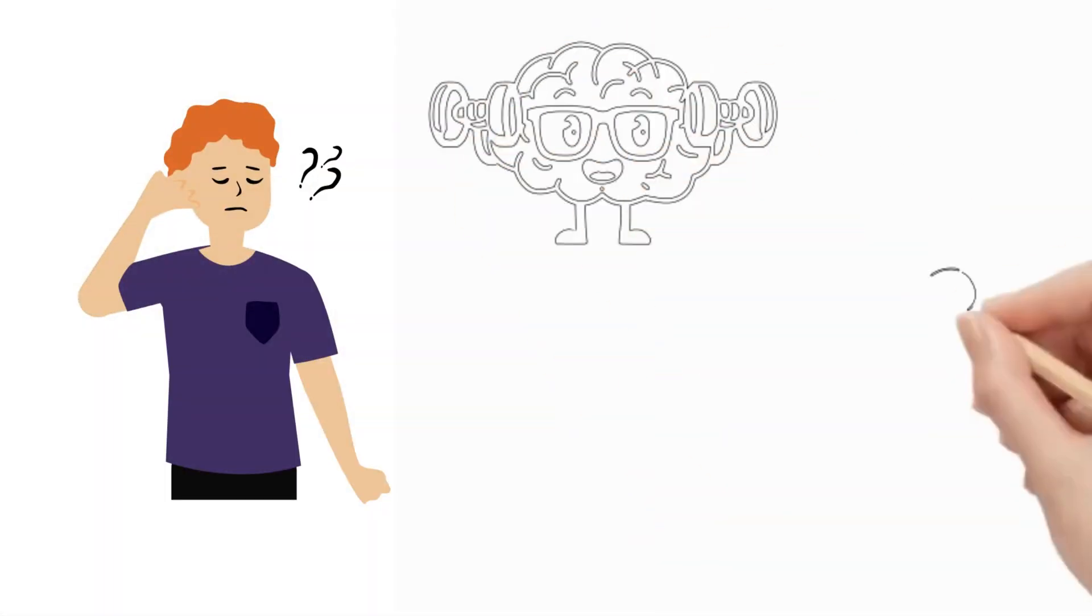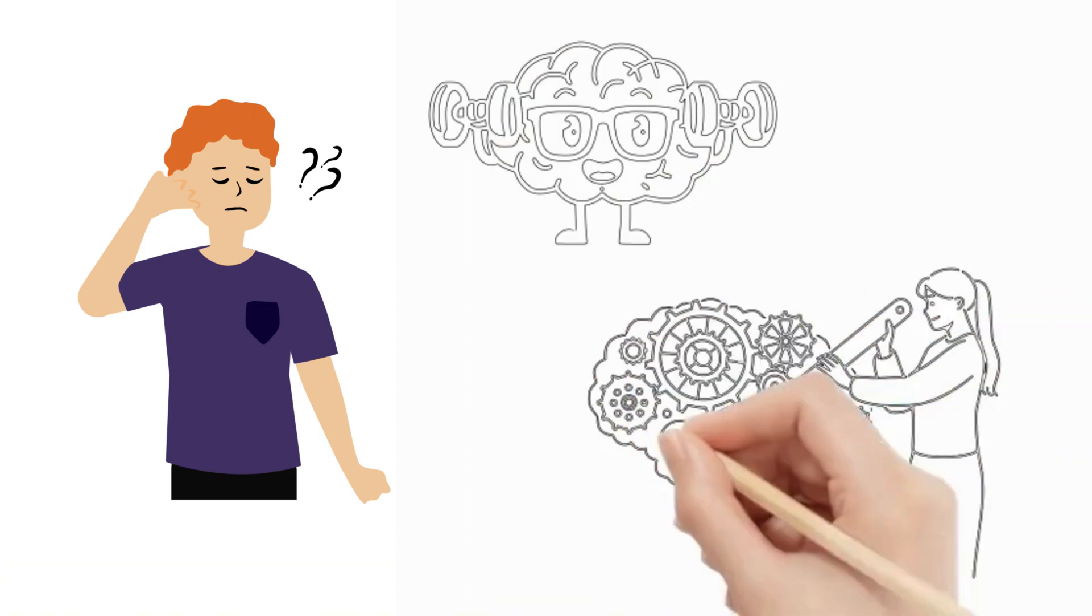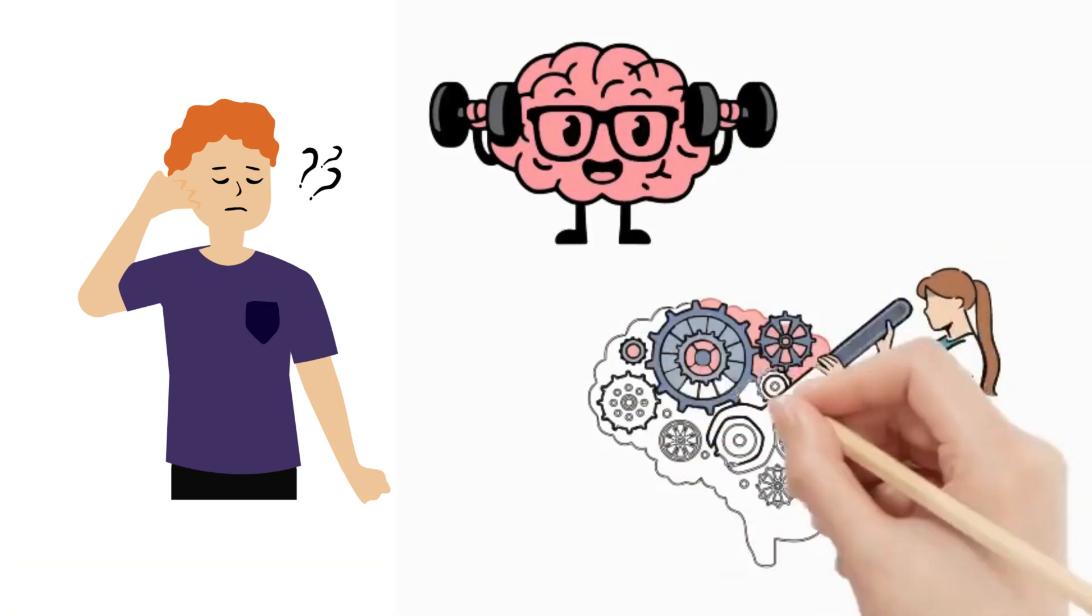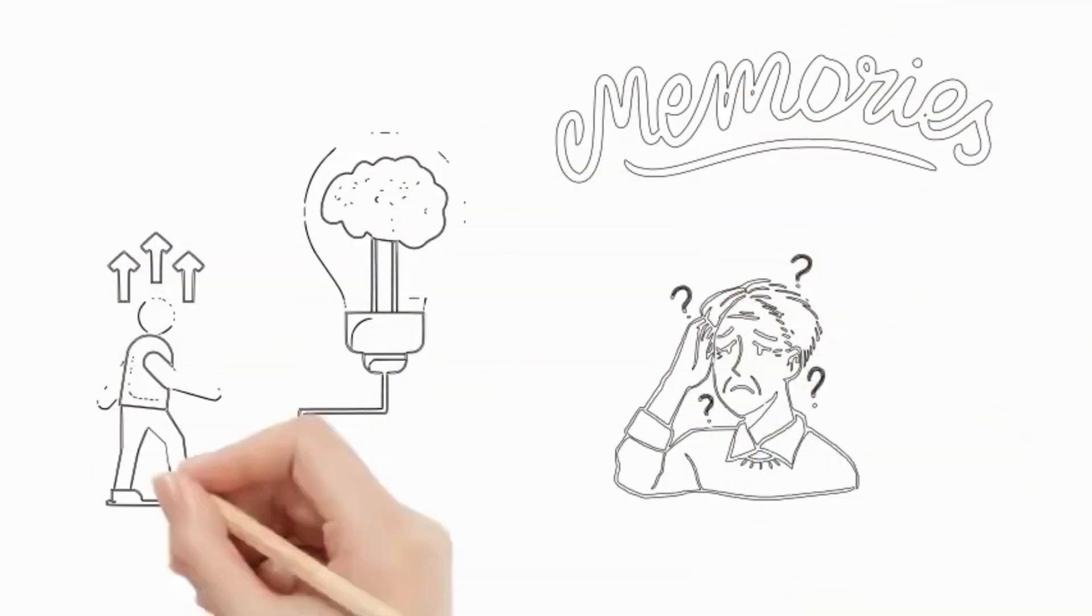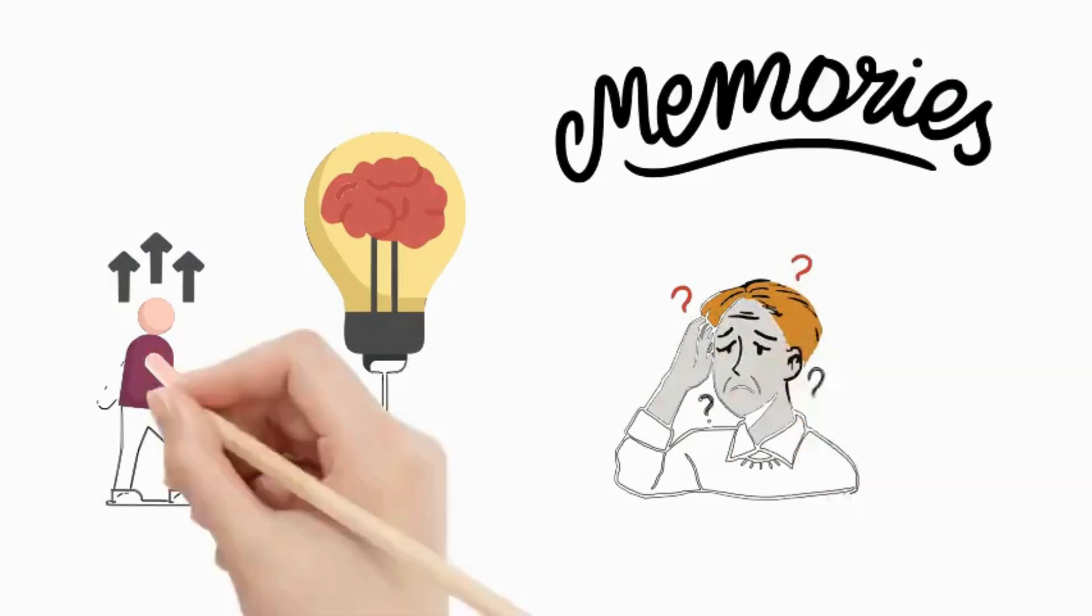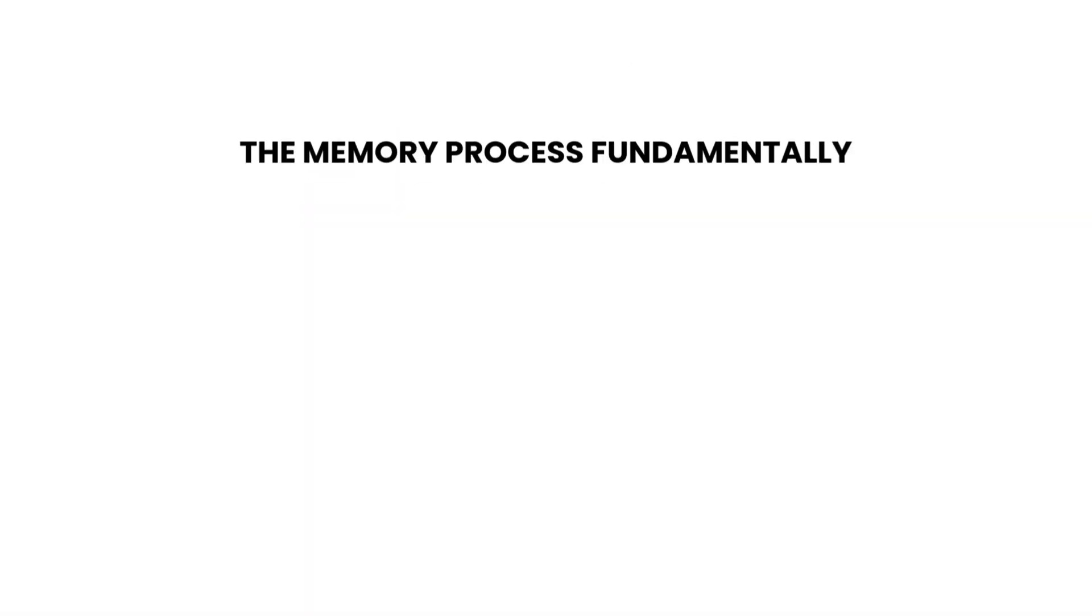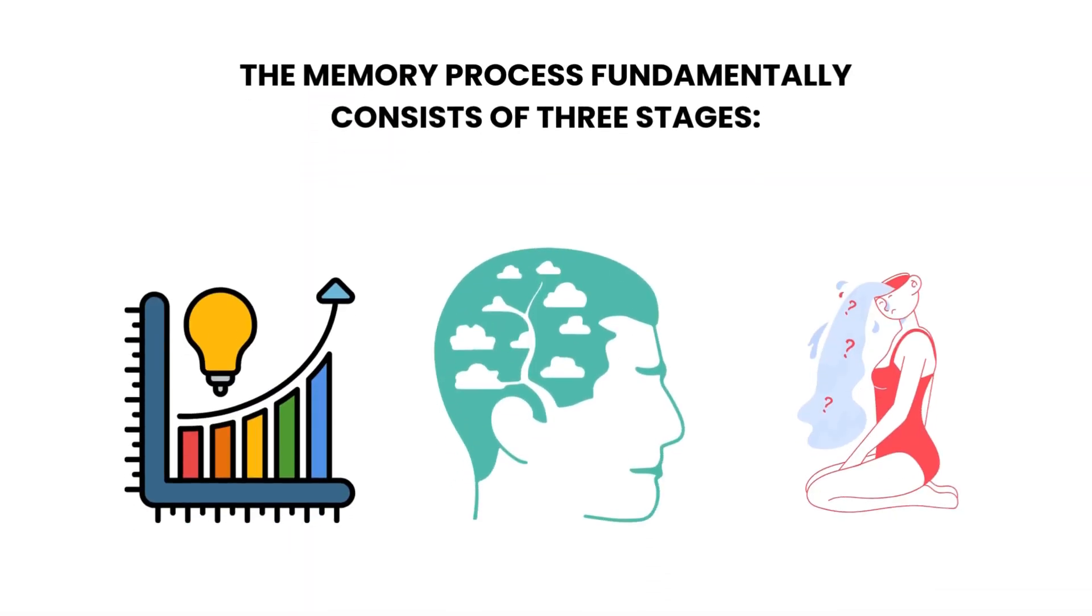Memory is a complex process composed of several different activities of the brain. To understand how to enhance memory, you first need to comprehend how the memory process works. The memory process fundamentally consists of three stages.